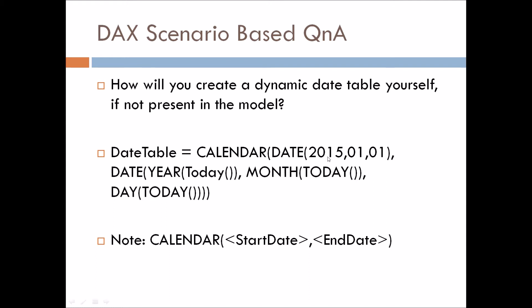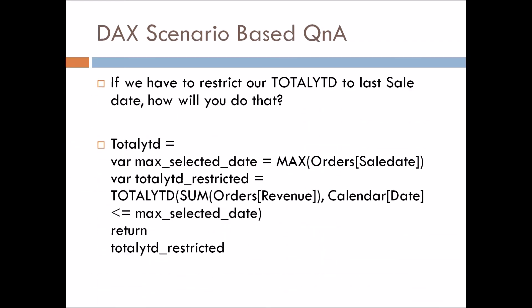The start date is hard-coded as 1st January 2015, which is the starting date of our data. The end date is dynamic — we use the TODAY function combined with the YEAR, MONTH, and DAY functions to extract today's year, month, and day respectively, resulting in today's date. In this way you can answer this question.